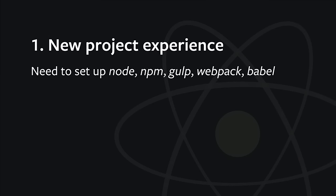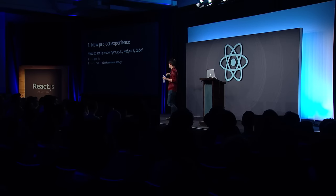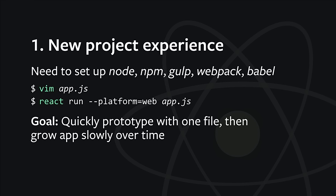What we'd like is the ability to create a single file for your app and just run it without setting anything up. The ideal is: create your app.js file and run something like React run platform=web, and that just opens your browser and runs the app. You could also say platform=iOS or platform=Android to start the mobile simulator. You should be able to quickly prototype with one file, and then when you actually want these tools — for flexibility, scaling, or production performance optimization — you can add them. But you shouldn't need any of them just to get started.